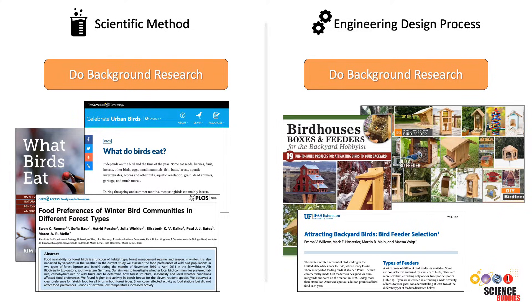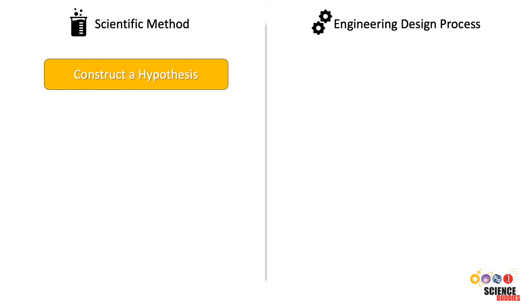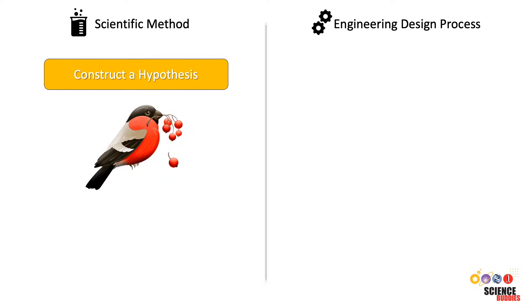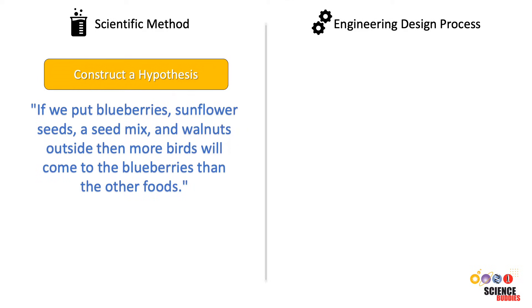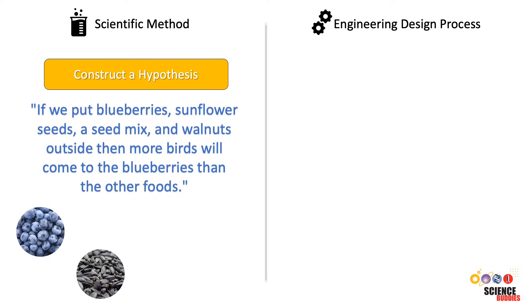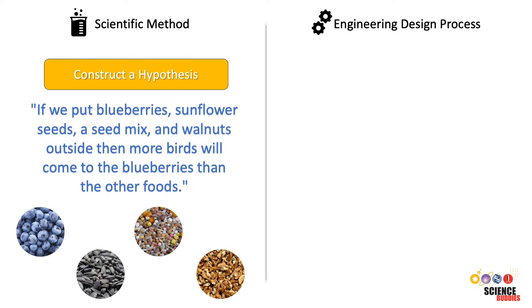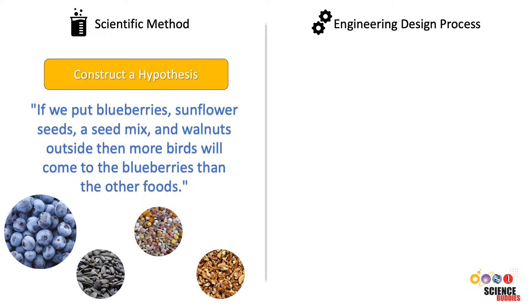The next step when using the scientific method is to make a hypothesis, or educated guess, about how we think our question will be answered by our experiment. In our bird watching project, maybe our background research revealed that birds enjoy sweet foods. We might hypothesize that if we put blueberries, sunflower seeds, a seed mix, and walnuts outside, then more birds will come to the blueberries than the other foods because they are sweet and juicy.